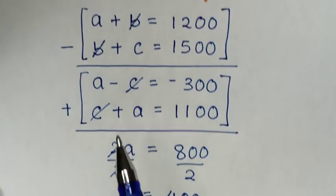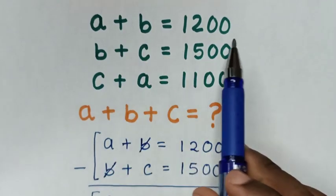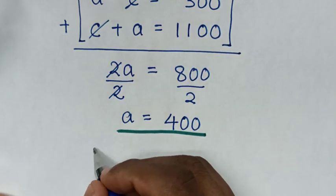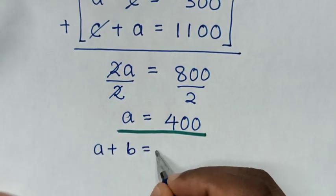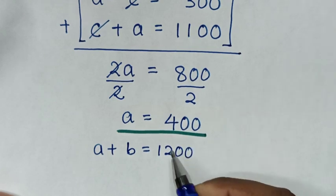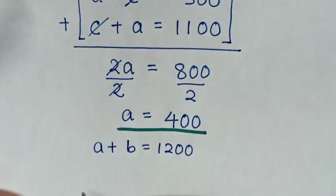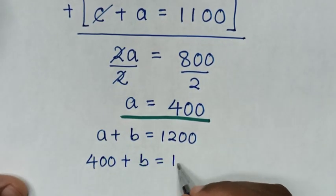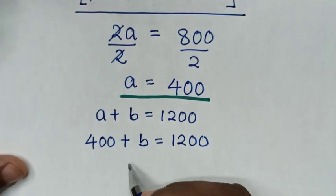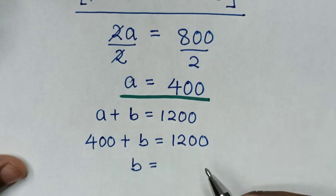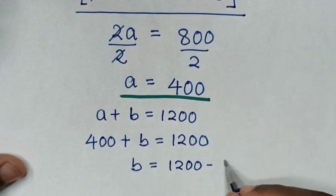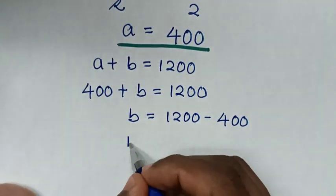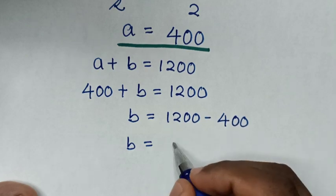Now to find the value of B, we use the first equation: A plus B equals 1200. Substituting A equals 400, we get 400 plus B equals 1200. Therefore, B is equal to 1200 minus 400, which is 800.